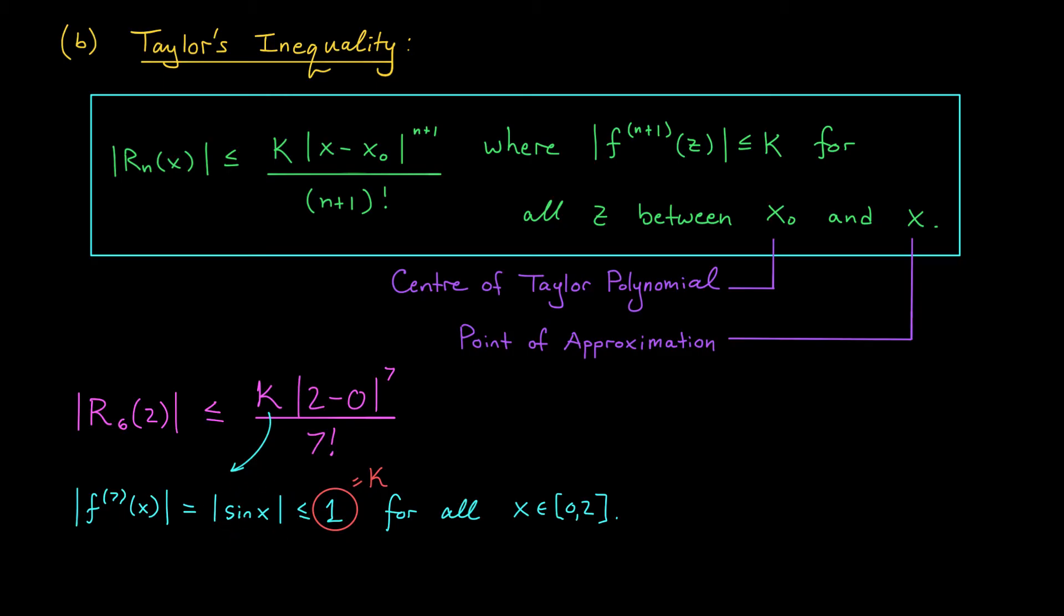Using this expression in our inequality above, we see that the error term is bounded by 1 times 2 to the 7 over 7 factorial, which simplifies to 8 over 315. Since our approximation for cosine of 2 was found to be minus 19 over 45, this error estimate is telling us that cos of 2 is somewhere between minus 19 over 45 minus 8 over 315 and minus 19 over 45 plus 8 over 315. If you punch these values into a calculator, you'll find that cosine of 2 is somewhere between minus 0.448 and minus 0.396.